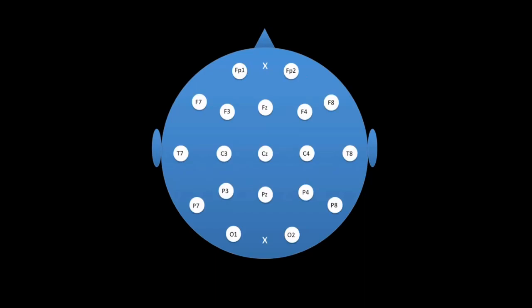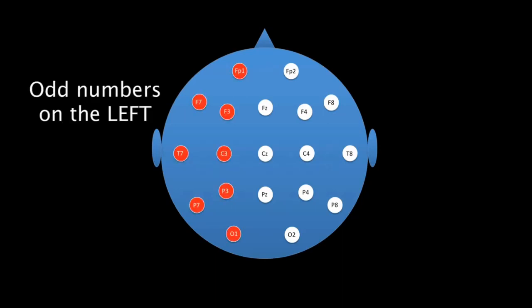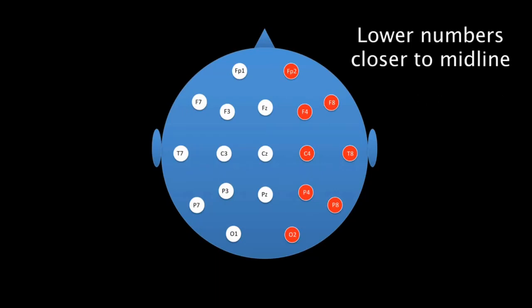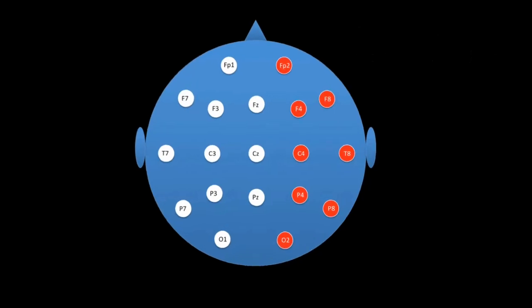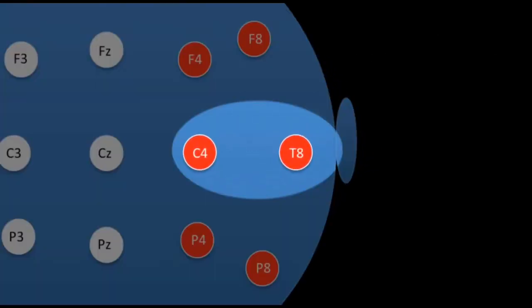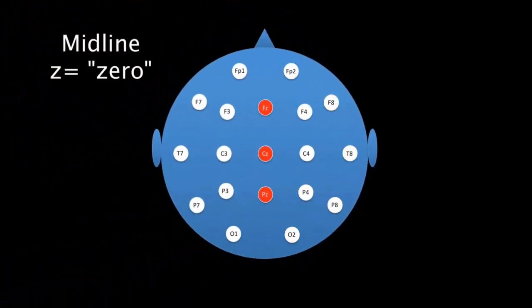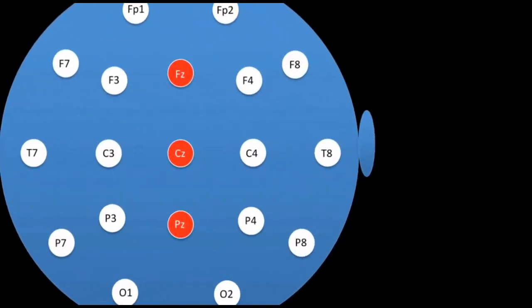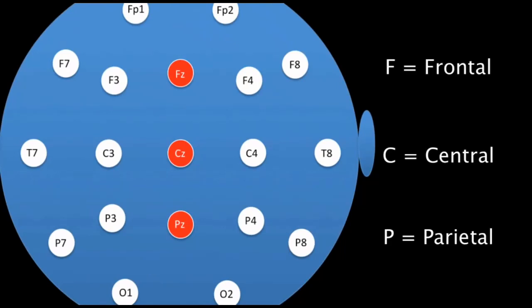The electrodes are labeled using a simple system of letters and numbers. The numbers indicate the side of the head: odd numbers are on the left side, and even numbers are on the right. Lower numbers mean the electrode is closer to the midline — so C4 is closer to the midline than T8. The midline itself is represented by a Z, standing for zero. The letters indicate position on the head: F for frontal, C for central, and P for parietal.